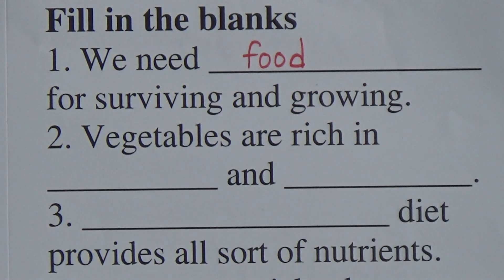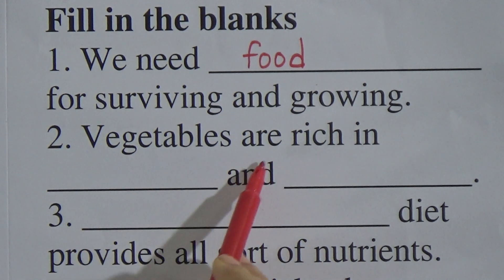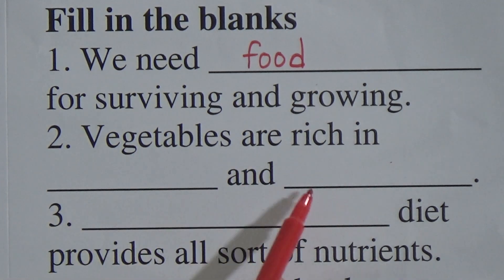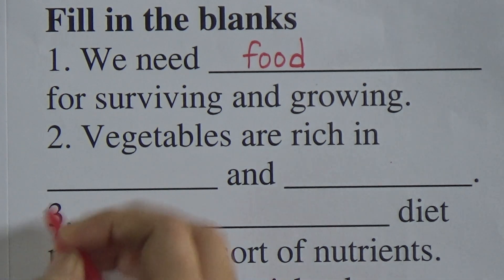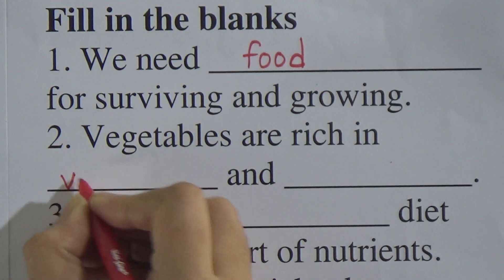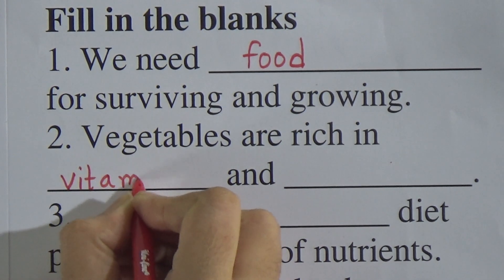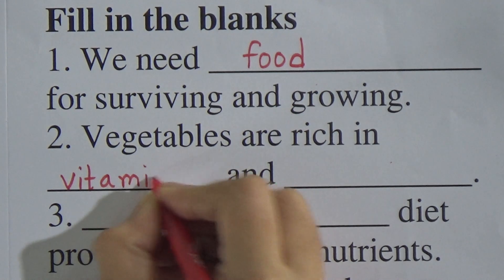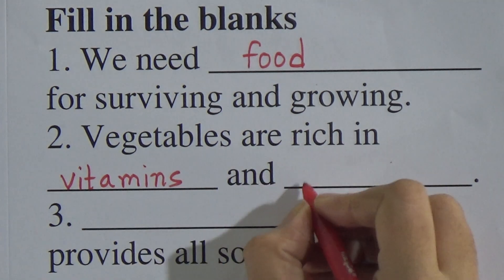Number two is: vegetables are rich in dash and dash. The answer is vitamins and minerals. So we will write here: vitamins and minerals.